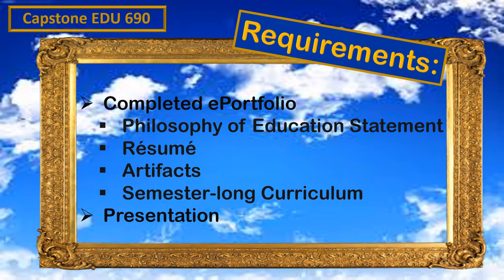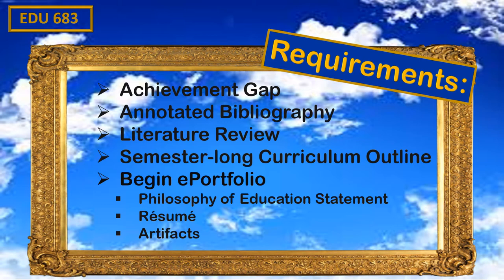Now that you know what will be expected of you in the Capstone course, let's look at the requirements in EDU 683. Your first assignment, 1.3, is to select an achievement gap occurring in current educational settings. This does not have to be within your own classroom or school district. The next assignment is 2.1, the annotated bibliography, followed by the literature review, 4.2. After you have completed the research process, you will design a semester-long curriculum outline, assignment 6.2.